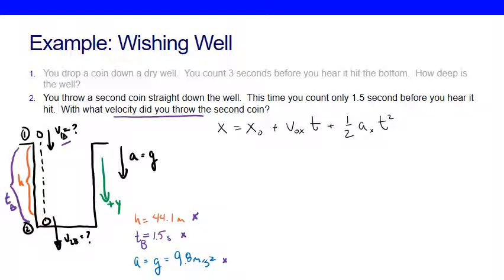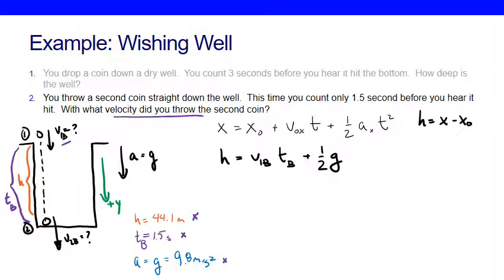This is the generic equation, so I always want to input my own variables. H is X minus X₀ — my displacement is the height of the well. So I write: H equals V1_B times T_B plus one-half G times T_B squared. I don't know my initial velocity but I've called it V1_B.